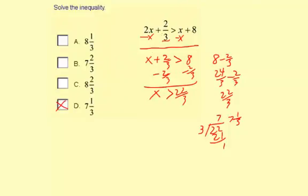Now let me show you if you multiply everything by 3 how that works out. 2x times 3 plus 2/3 times 3 greater than x times 3 plus 8 times 3. So let's simplify.